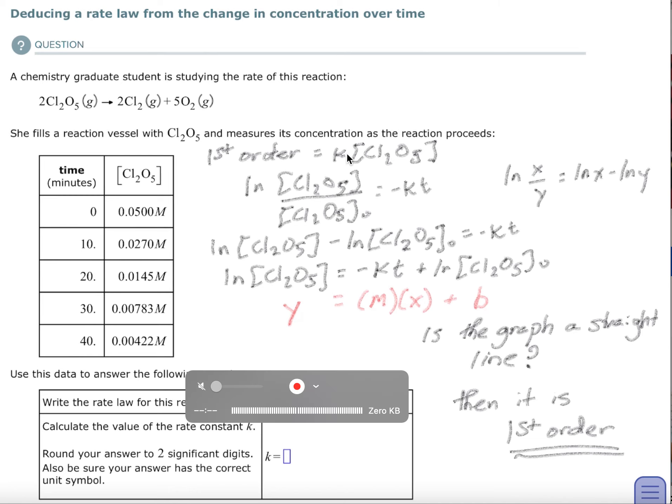So a first order reaction is simply your constant k, which they do not give you, times the concentration of the stuff either being produced or being used up. In this case, it's going away, so this is being used up. If it were a first order reaction, this would be the rate law. When you're talking about different concentrations, you usually use the integrated rate law.